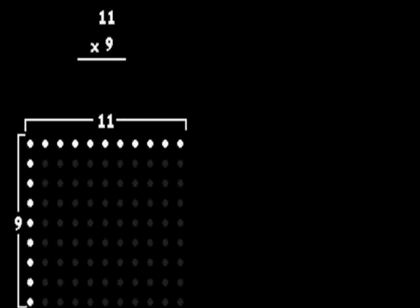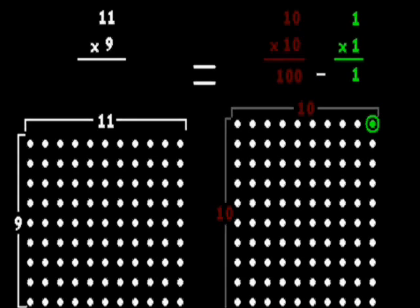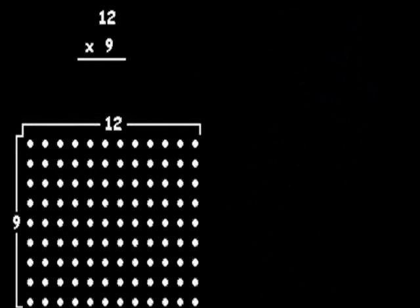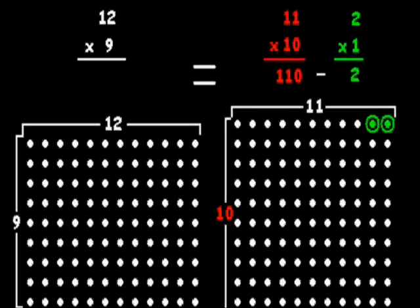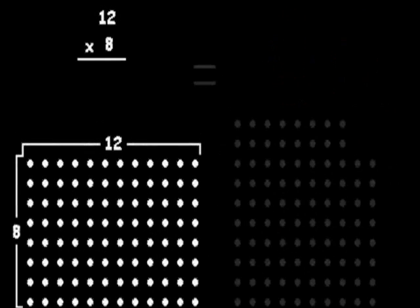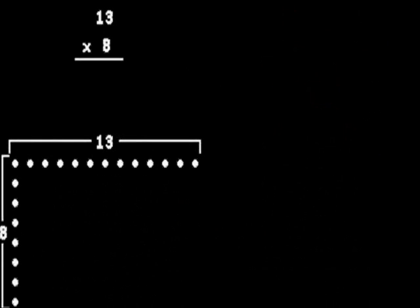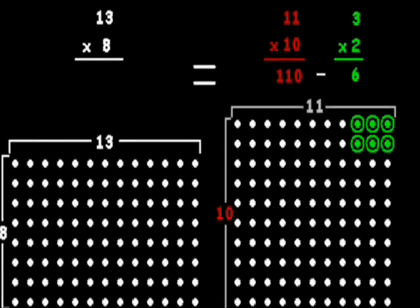Eleven times nine is one less than one hundred. Twelve times nine is two less than a hundred ten. Twelve times eight is four less than a hundred. Thirteen times eight is six less than a hundred ten.